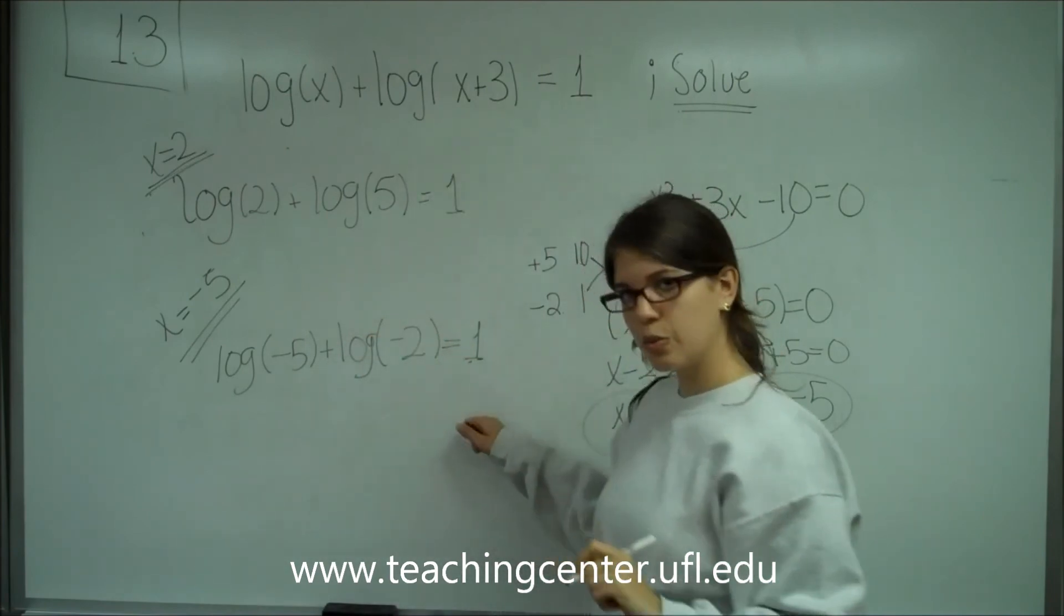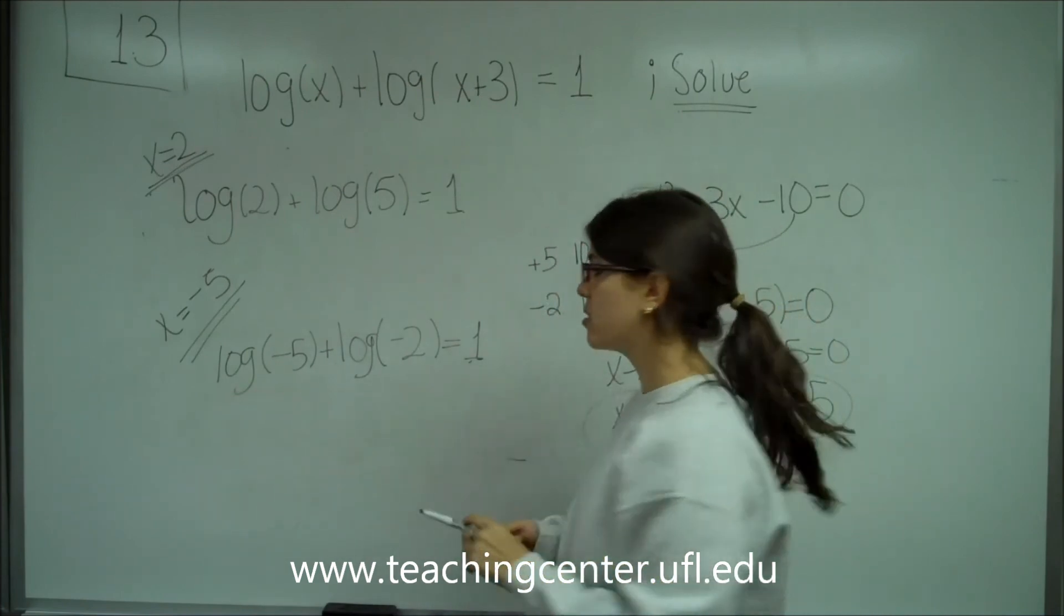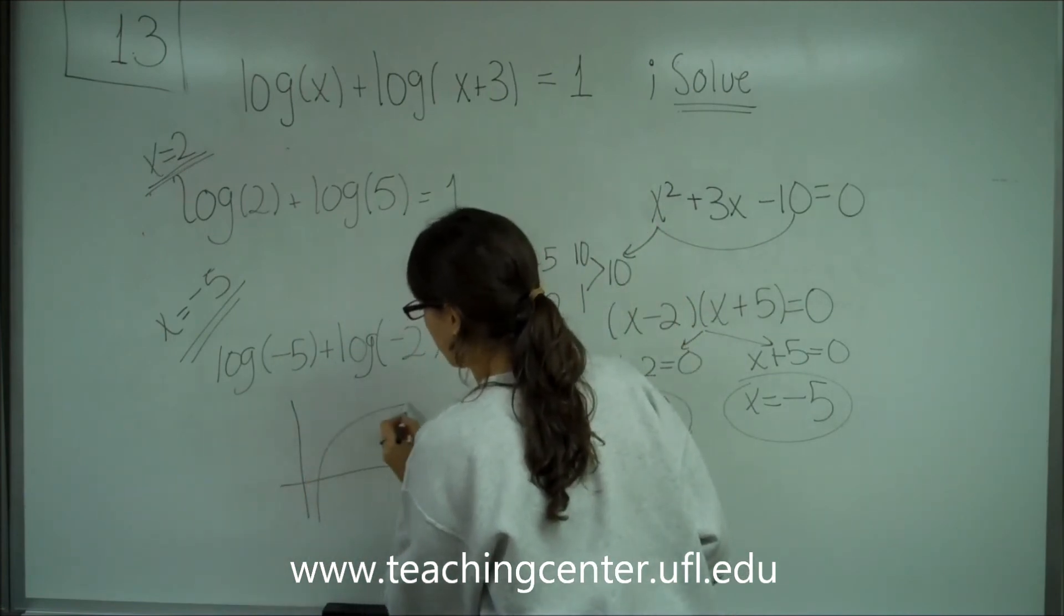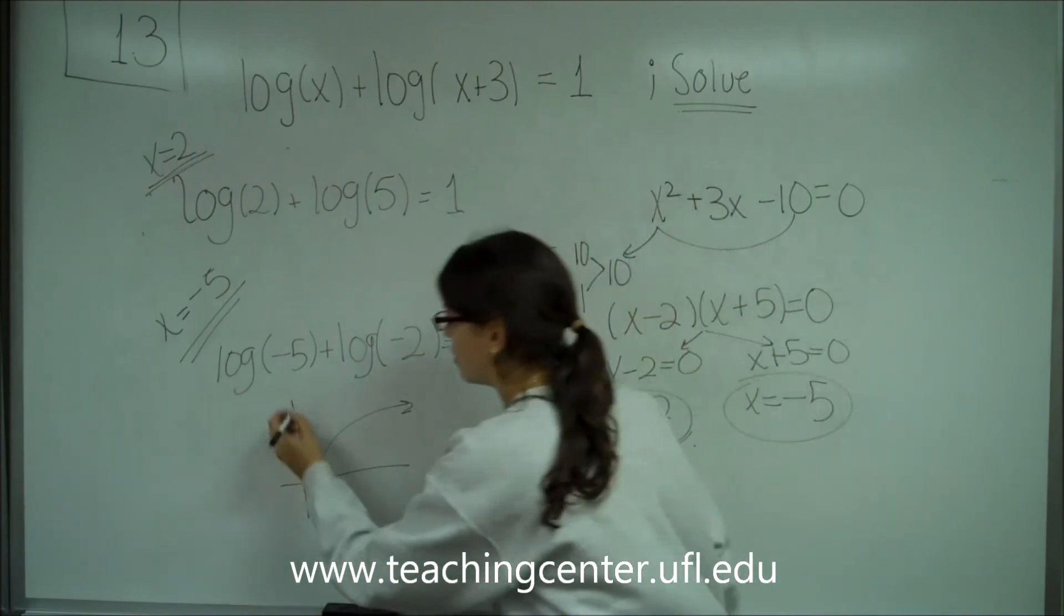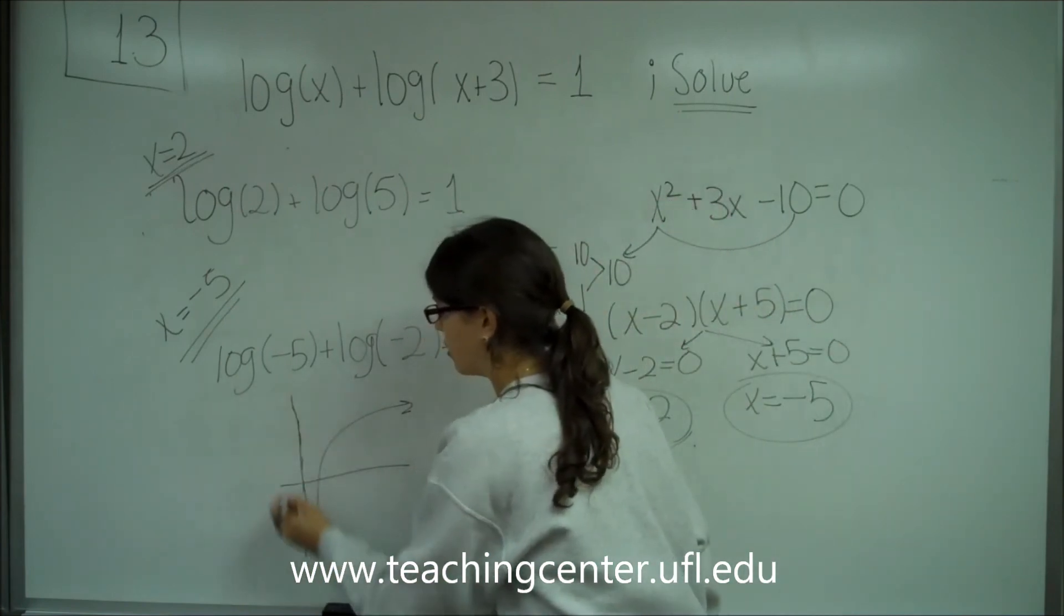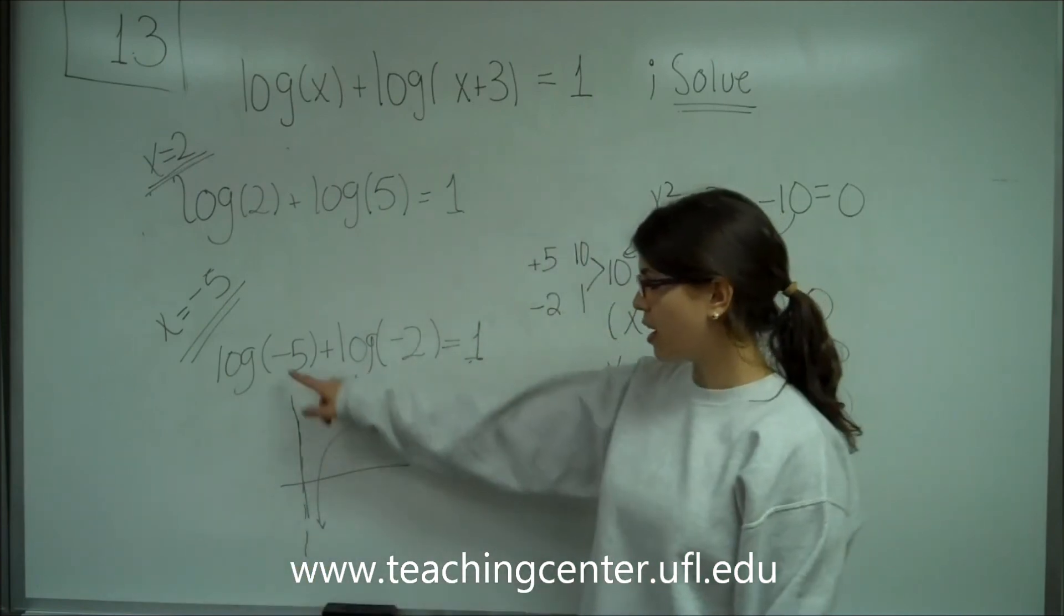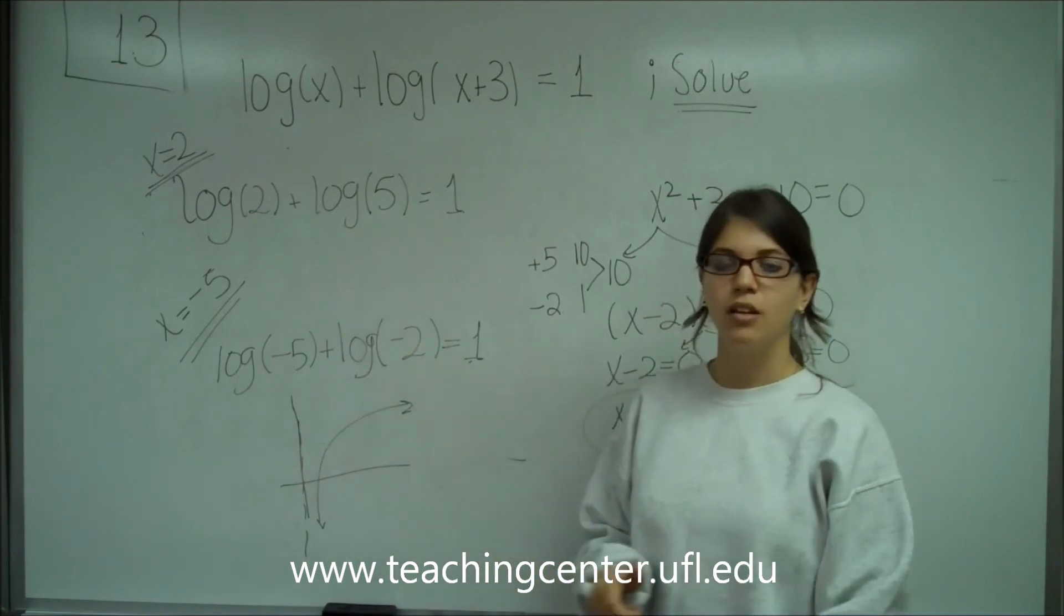So here's where the problem comes in. You see how a log of a negative number is not possible because the log function looks like this. It's always good to remember what the graph looks like. So you can refer back to it. And there is a vertical asymptote along here. So nothing could be on the negative side. You have a log of negative 5 and also a log of negative 2. So both of these don't work.